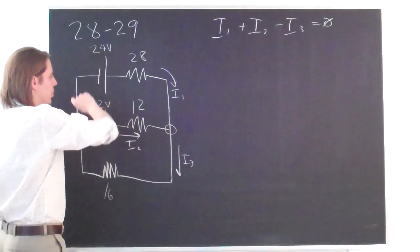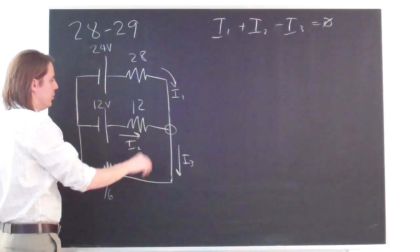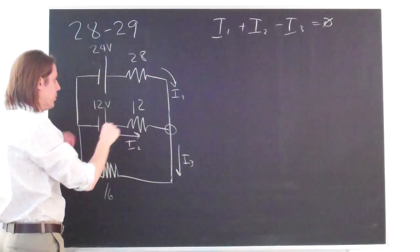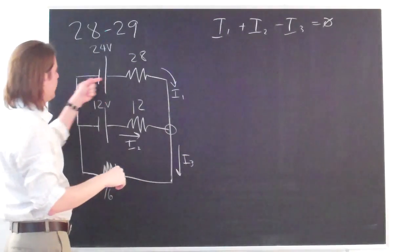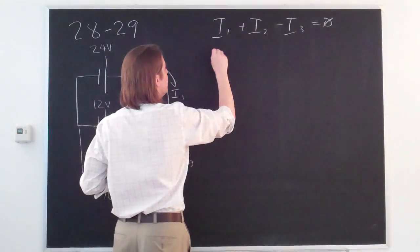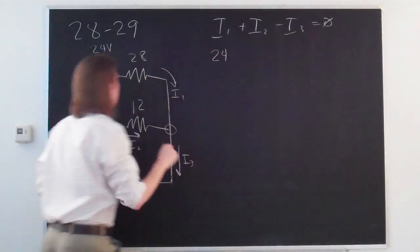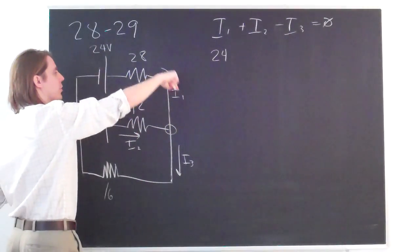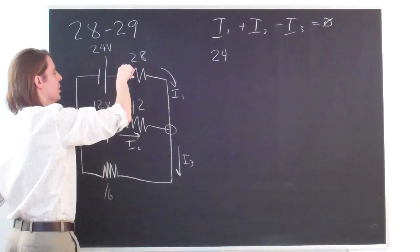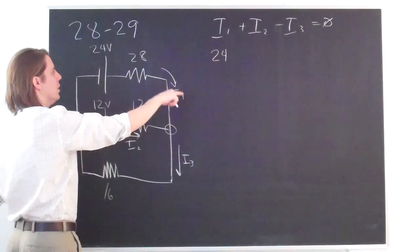And then we can do two loop rules. Loop here and a loop here. We'll go clockwise through the loop. If you go across a battery that way, it's positive. So we'll get 24. And then we're going along the current direction. So that's minus I1 times 28. Minus 28I1.